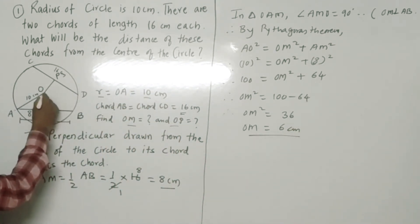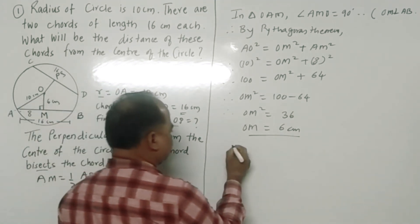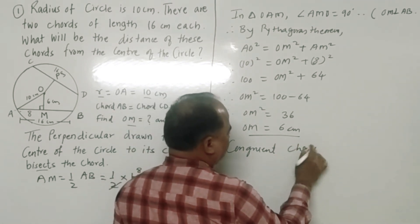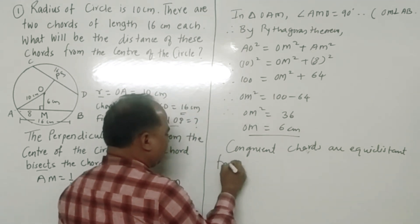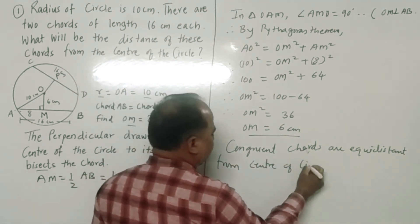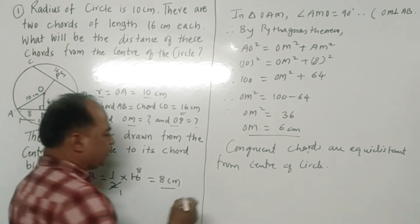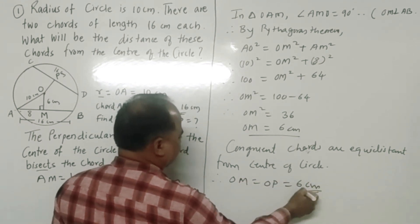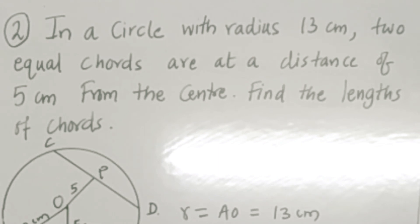Therefore OM is equal to 6 centimeters. So the distance of the chord from the center is 6 centimeters. By the property that congruent chords are equidistant from the center of the circle, chords AB and CD are congruent chords, so they are at equal distance. Therefore OM equals OP, which equals 6 centimeters.